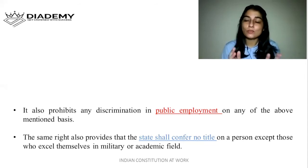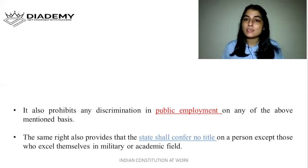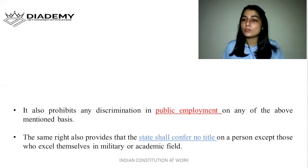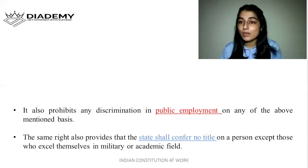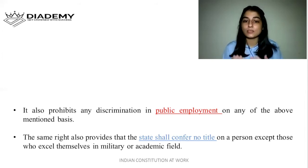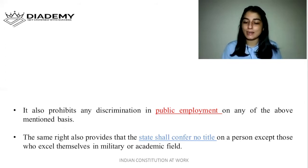At the same time, there was a controversy that awards like Bharat Ratna also constitute a title and should be abolished. But it was clarified by the judiciary that these awards are given to people who excel in military or academic fields for their distinguished services. So under Article 18, the state shall not confer any title except those given to people who excel in military or academic fields.